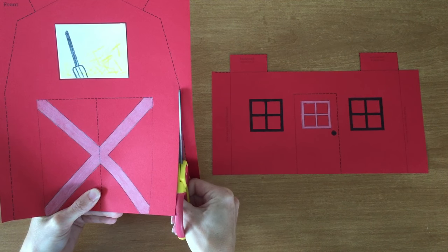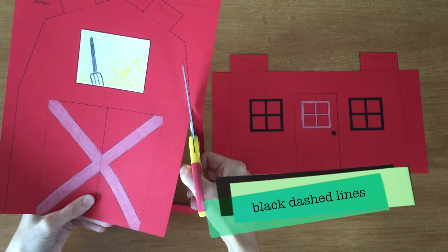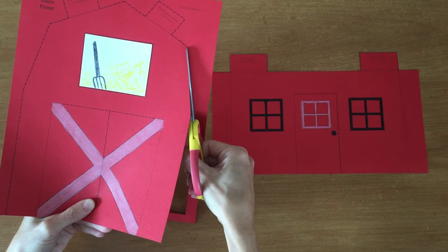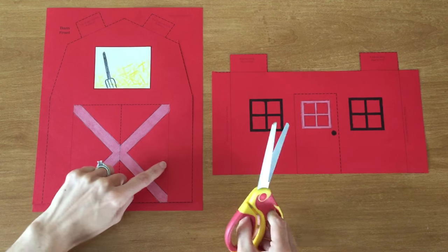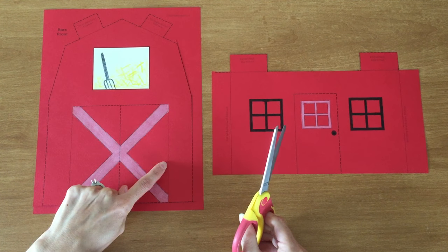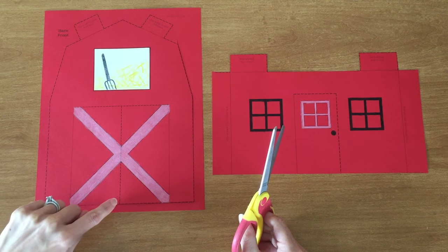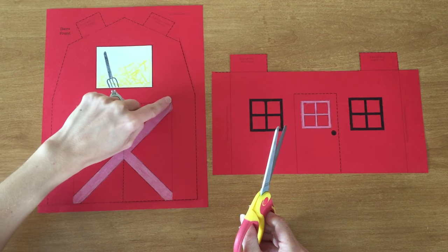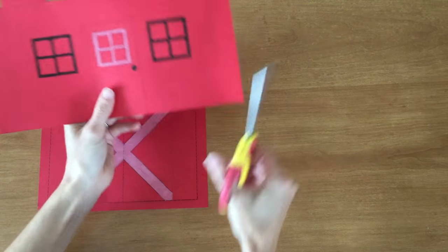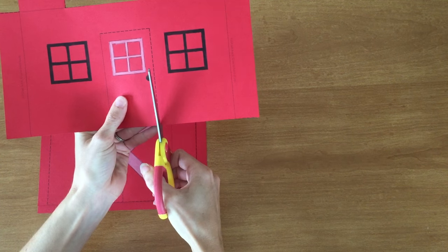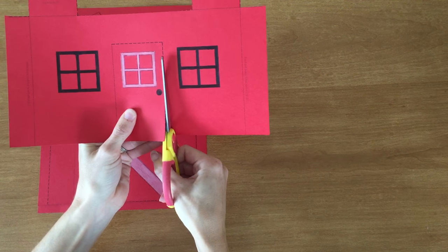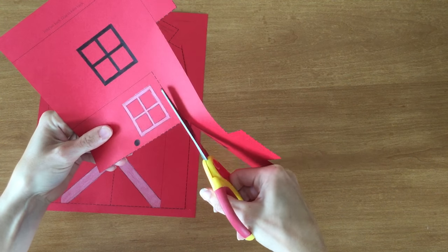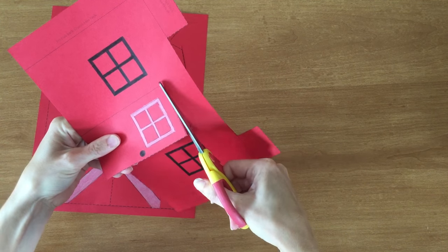Cut out the pieces to your barn by cutting on the black dashed lines. Don't cut on the gray dotted lines. That's where you'll be folding later. Make sure to cut the lines on the doors. On the front it's going to be right up the middle and across the top. And on the side piece it's going to be this side and across the top. You'll also have two pieces to cut on the roof pieces. And of course you'll cut out the back and the other side of the barn as well.